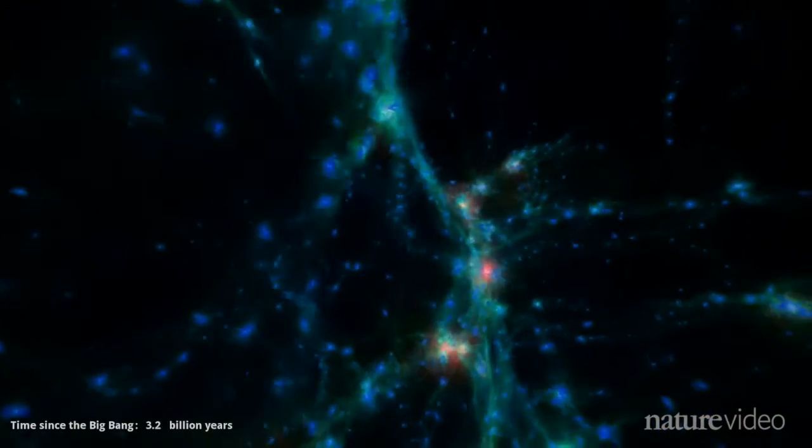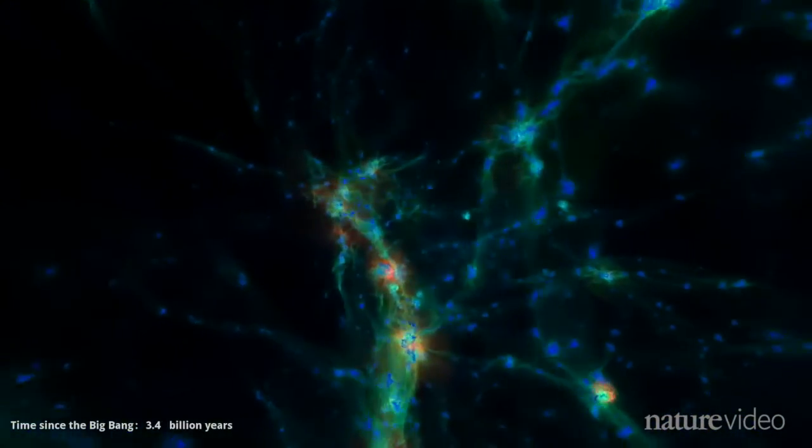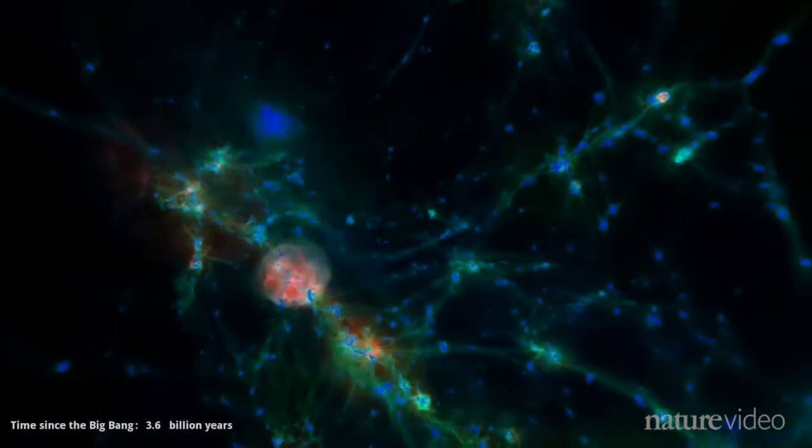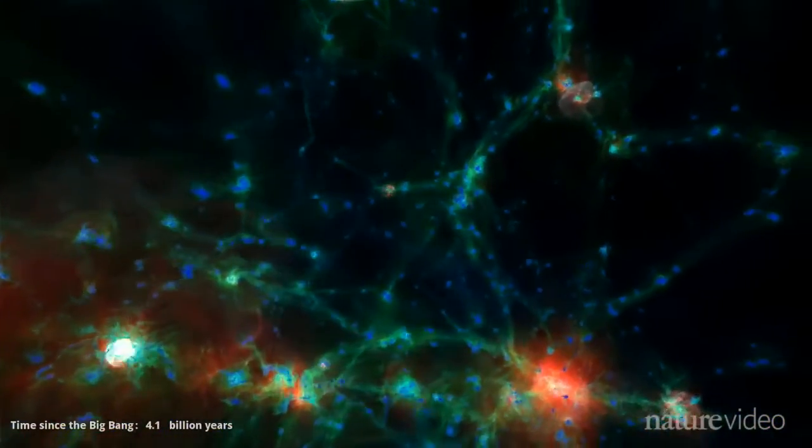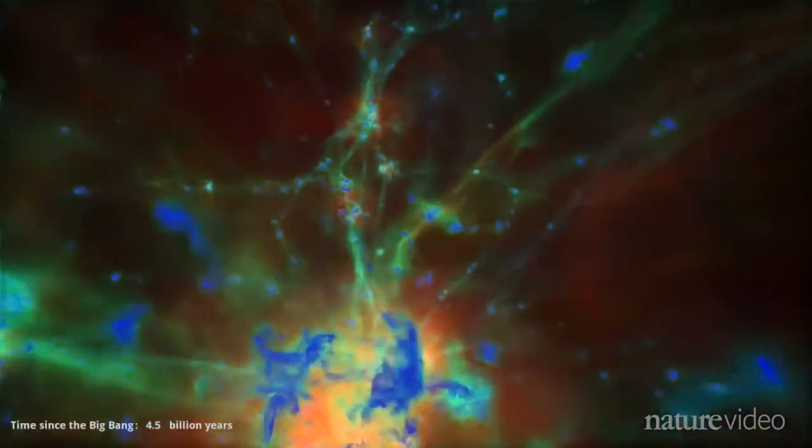Now we're looking at the ordinary matter. Blue shows relatively cold clouds of gas, where stars form. Green is warmer gas, while red and white show hot regions around the most violent galaxies.